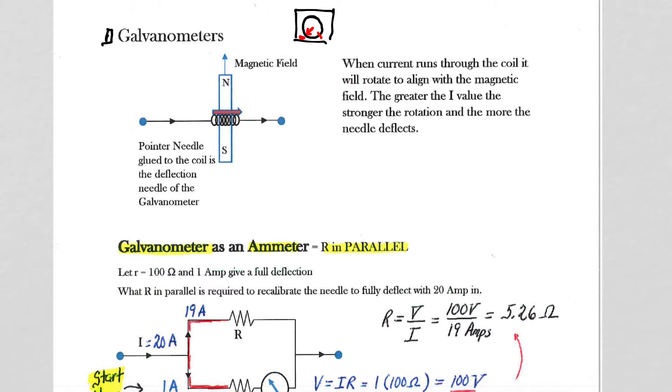Basically you would run current into the galvanometer, and depending on the amount of current flowing through the galvanometer, the needle will deflect. When we study magnetism, we'll understand more about the details of why this needle will deflect when we run current through it.